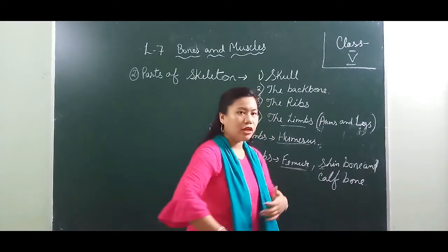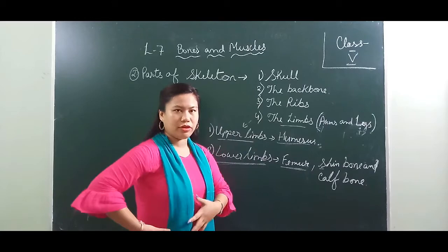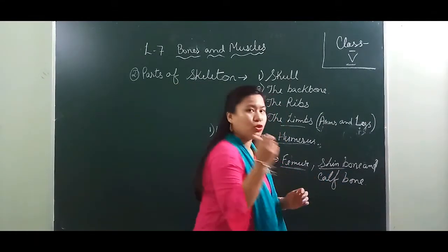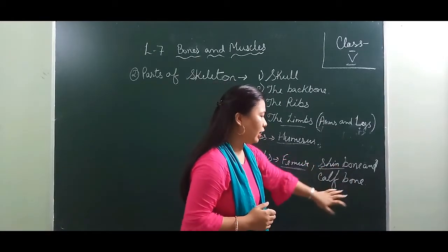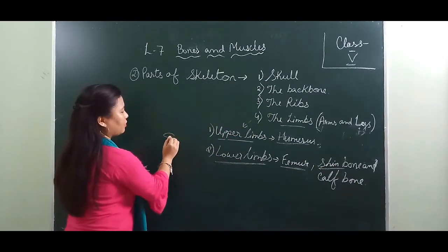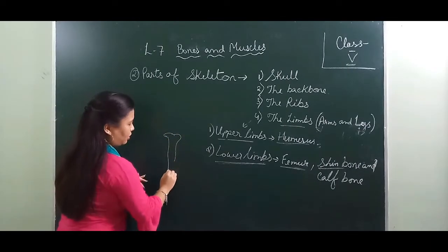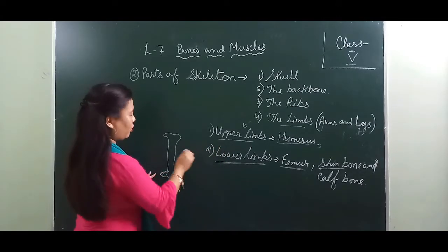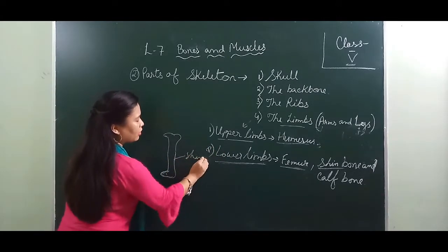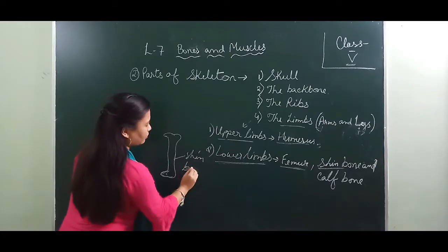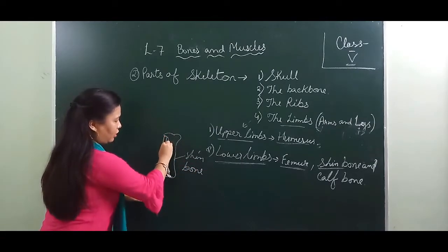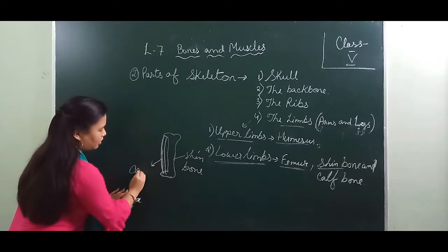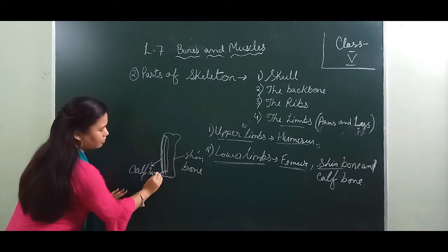The lower limbs — the legs — are attached to the hip bone, just as the arms are attached to the shoulder blades. The upper half of the leg has a long bone called the femur, or thigh bone, which is the longest bone in the body. The lower half of the leg has two bones: the shin bone and the calf bone.